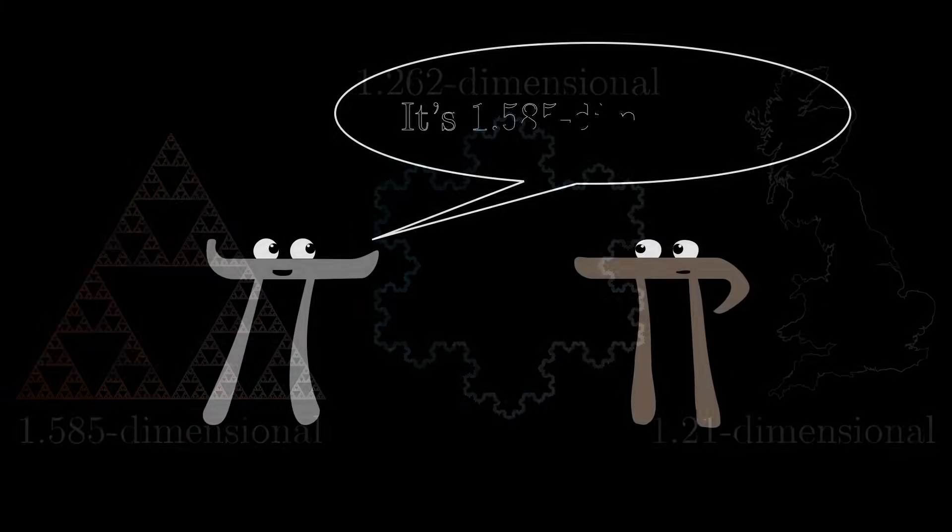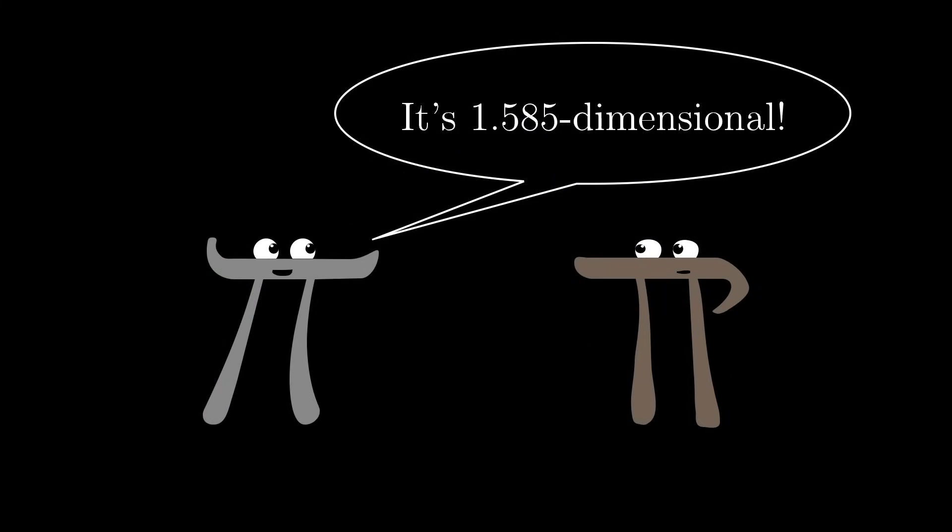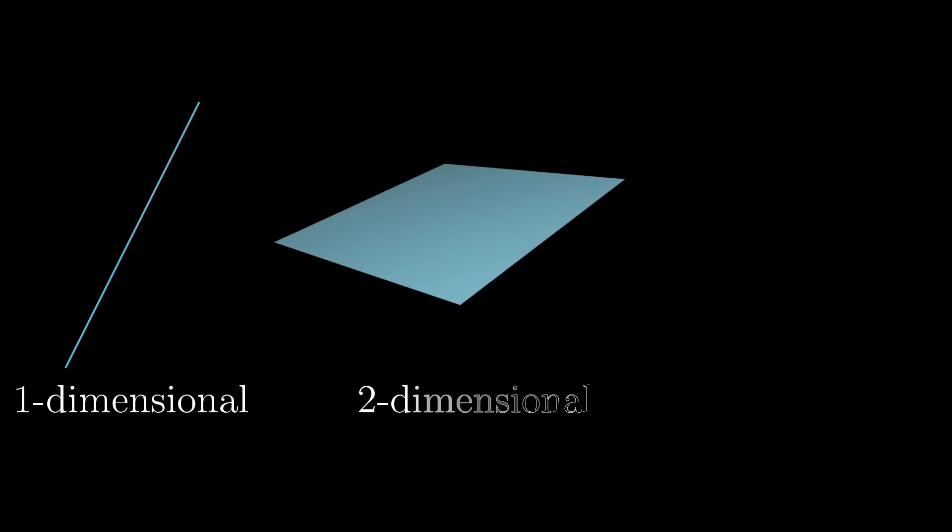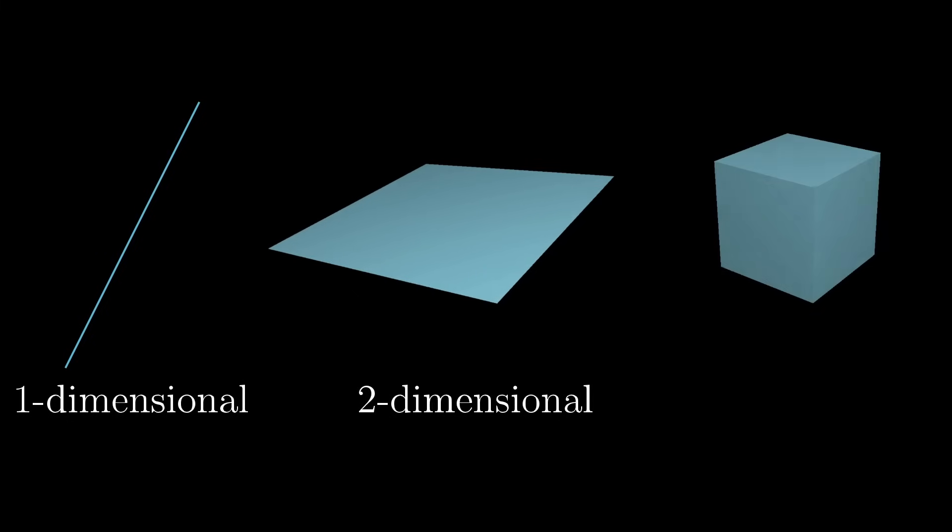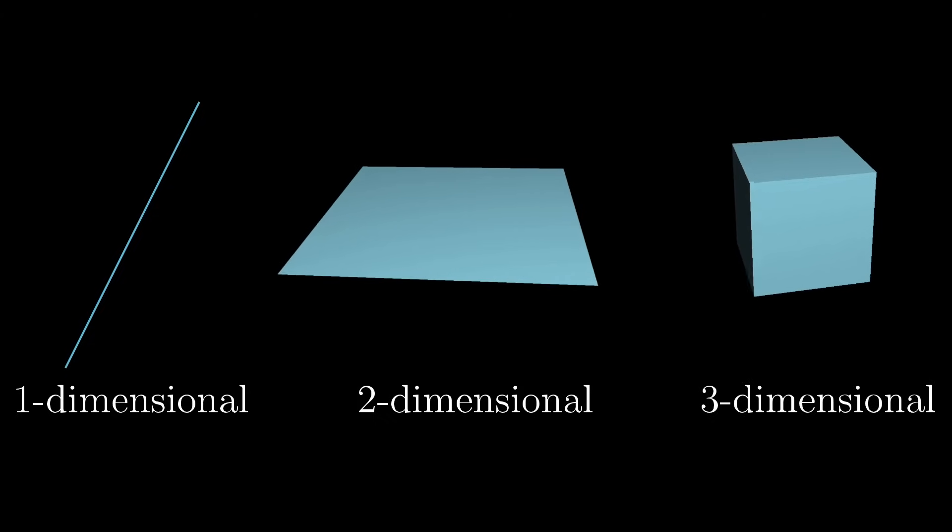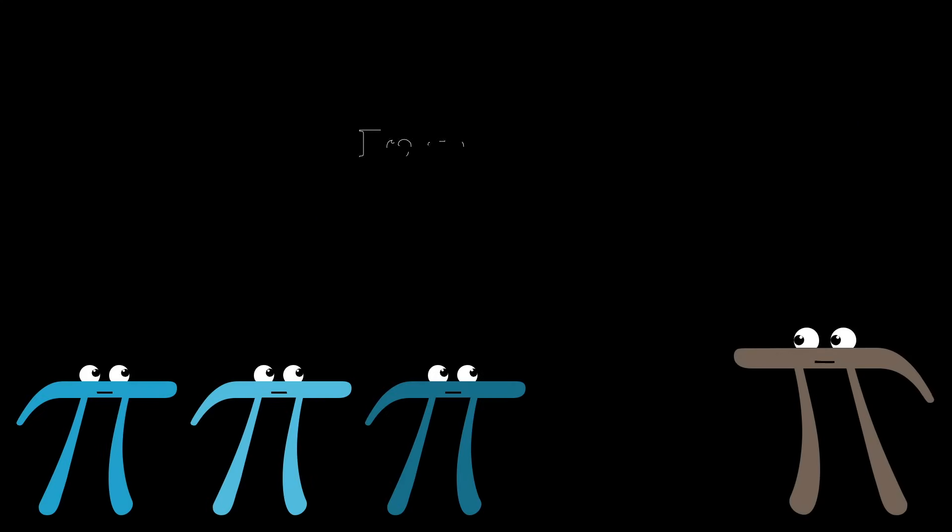I think when I first heard someone reference fractional dimension like this, I just thought it was nonsense. I mean, mathematicians are clearly just making stuff up. Dimension is something that usually only makes sense for natural numbers, right? A line is one-dimensional, a plane is two-dimensional, the space that we live in is three-dimensional, and so on. And in fact, any linear algebra student who just learned the formal definition of dimension in that context would agree, it only makes sense for counting numbers.